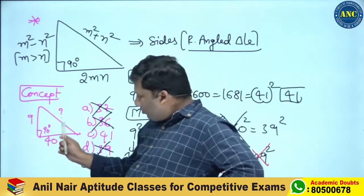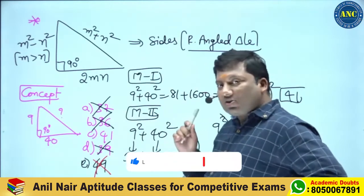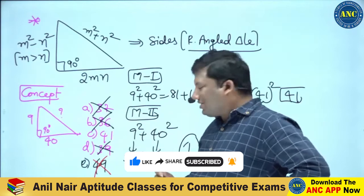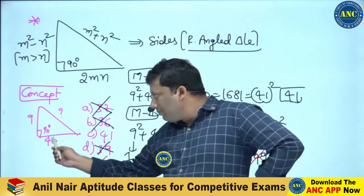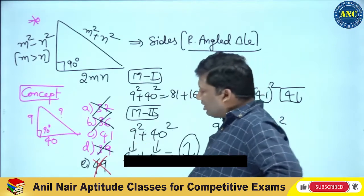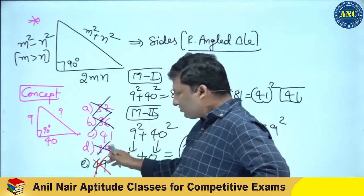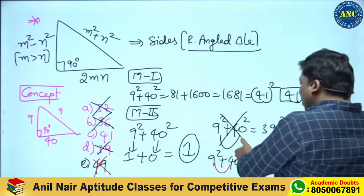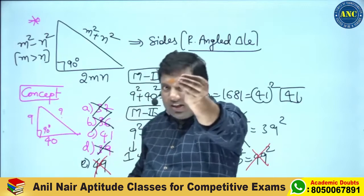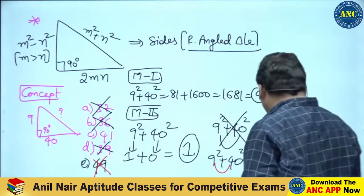To recap: 9² has unit digit 1, 40² has unit digit 0, so the sum has unit digit 1. Option 36 is even, but odd + even must be odd — not possible. Option 39: 40² itself is greater than 39², so not possible. Option 49: 40² is 1600, and adding a two-digit number cannot jump to 49² — not possible. The answer is 41.